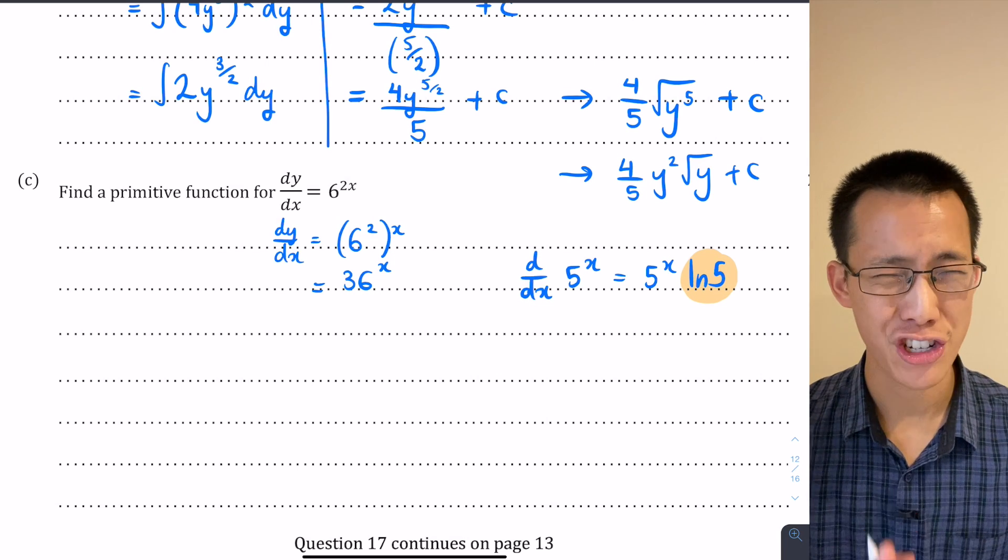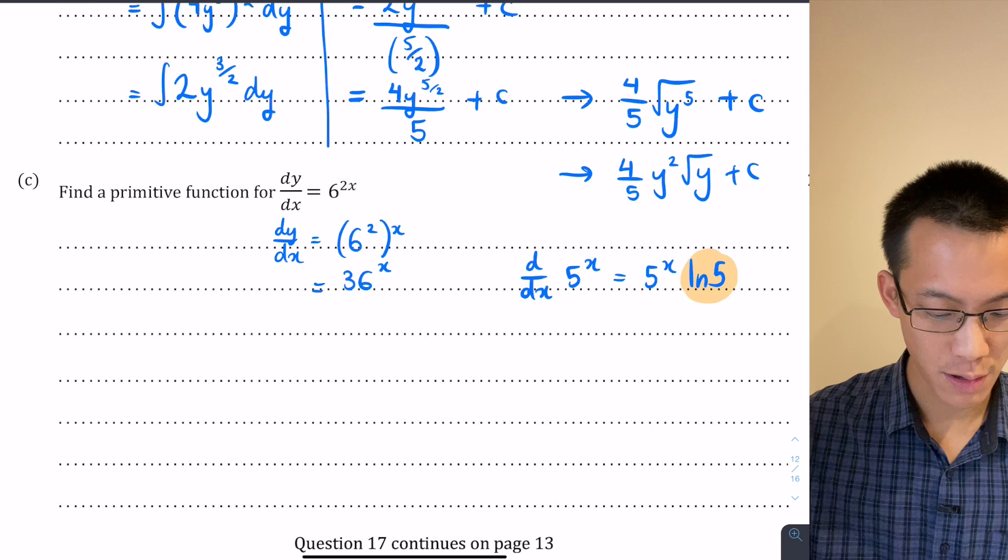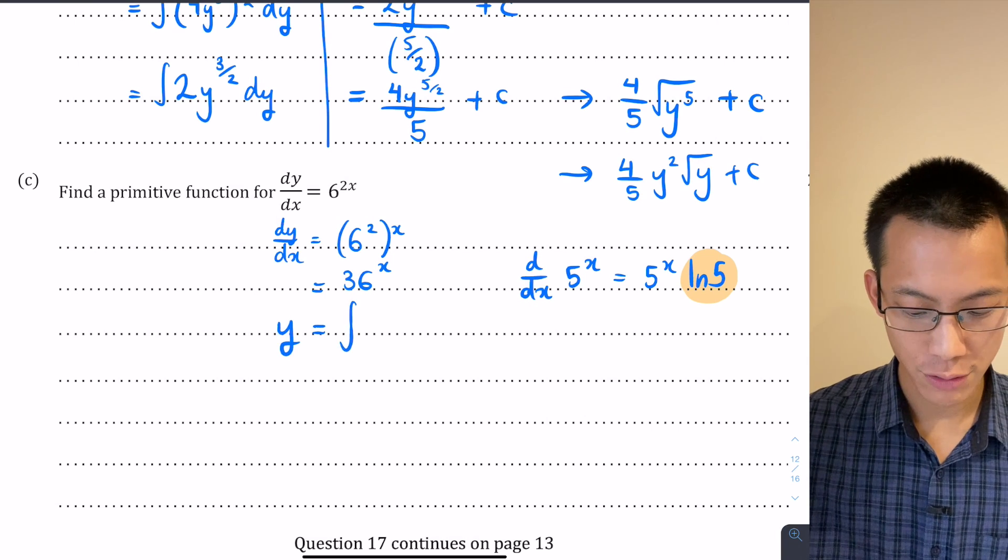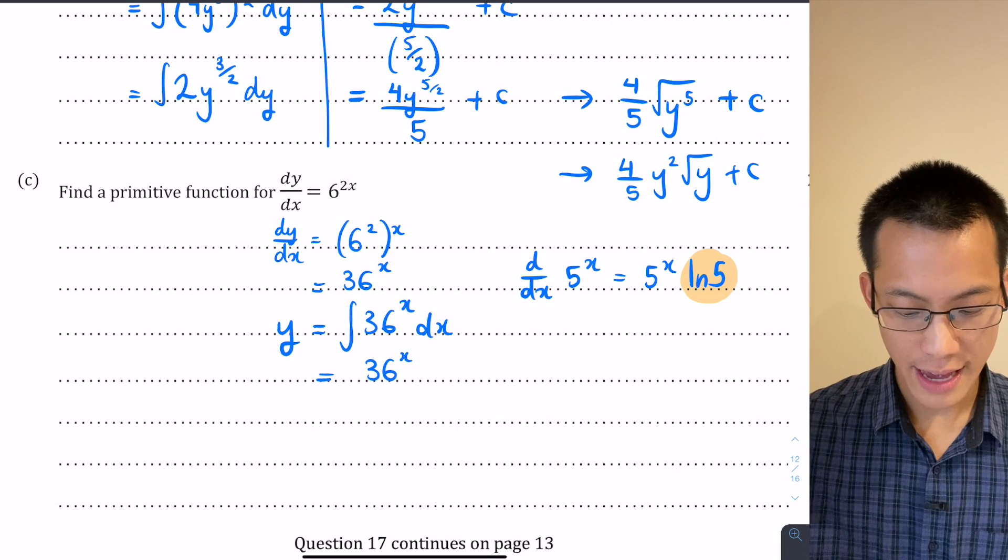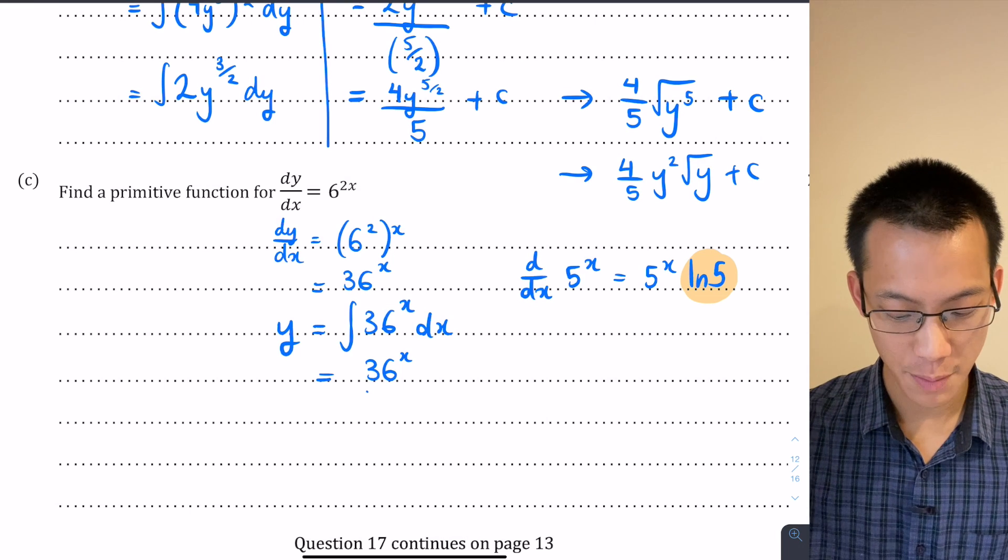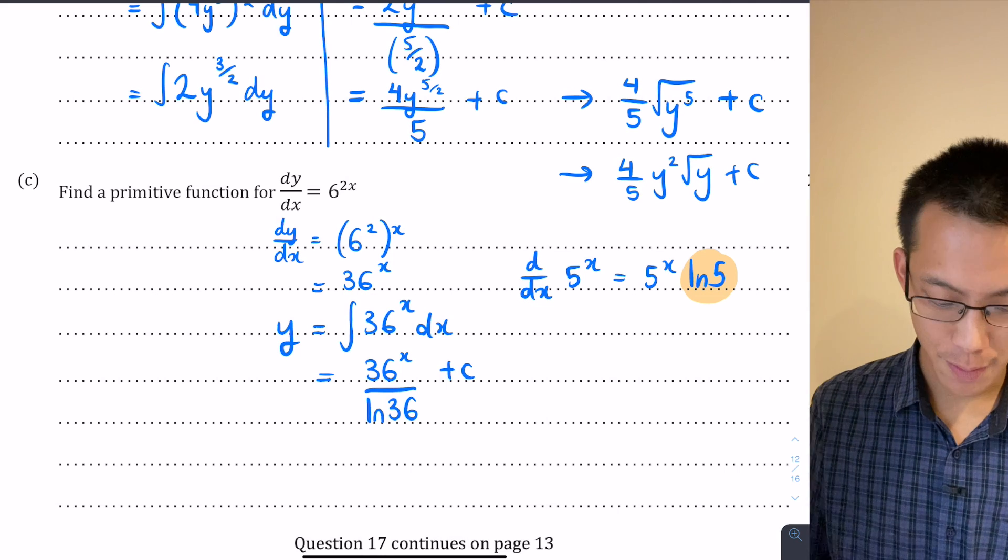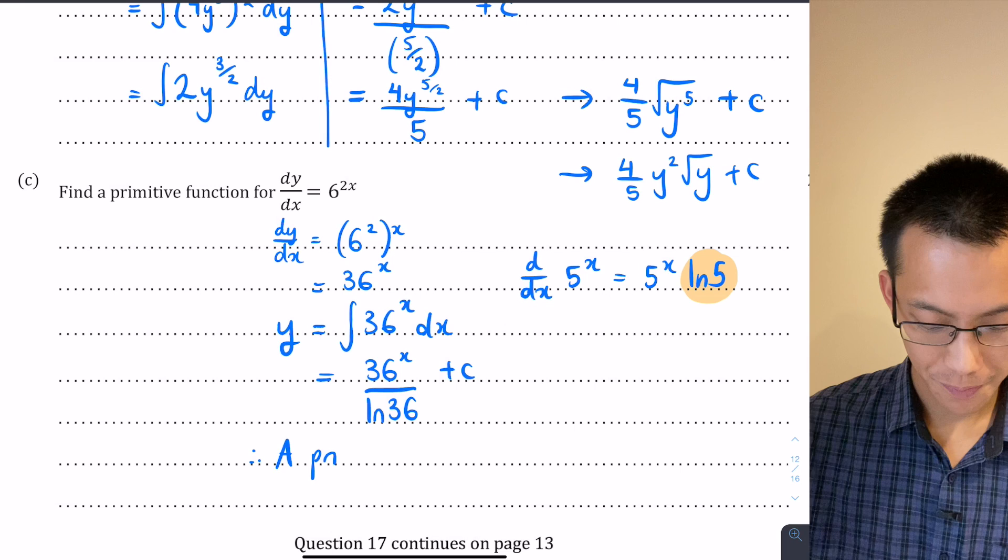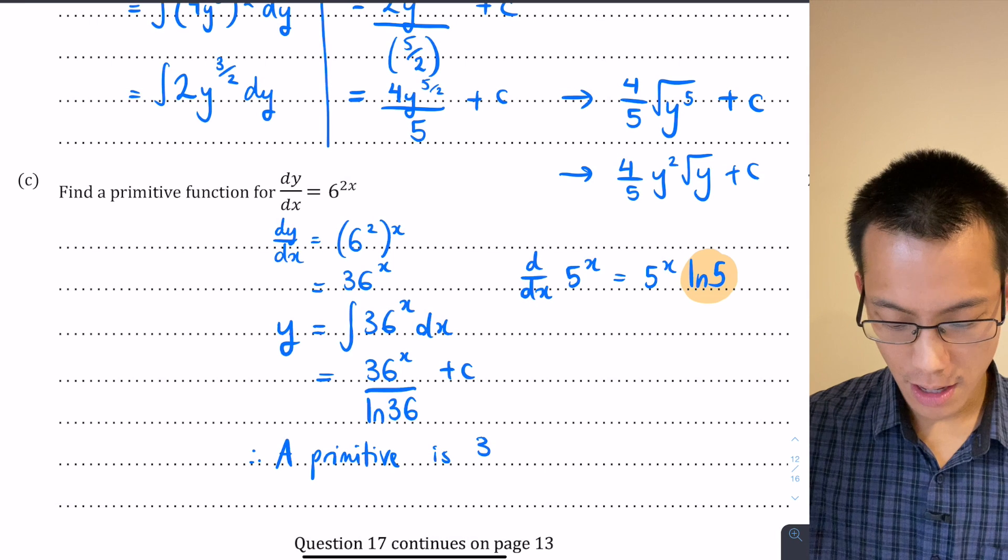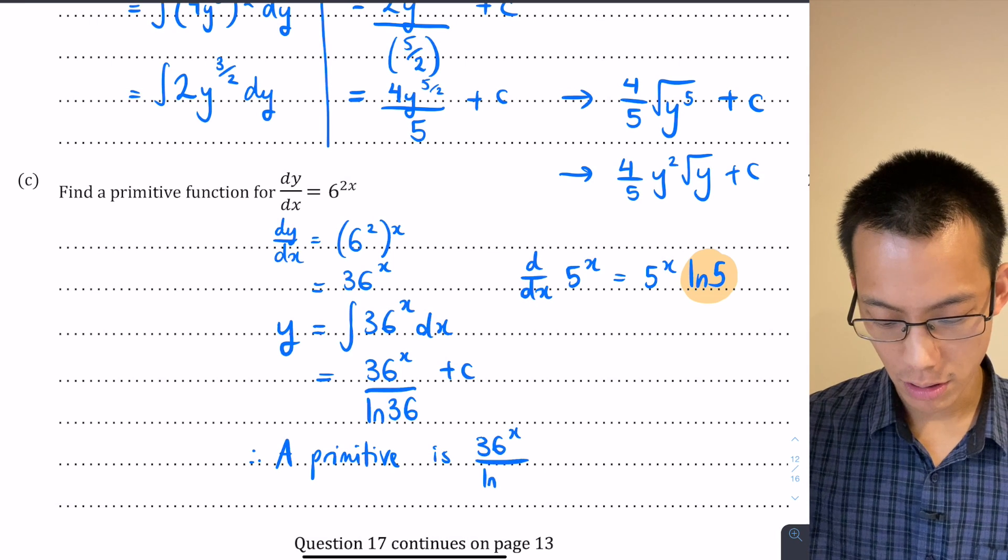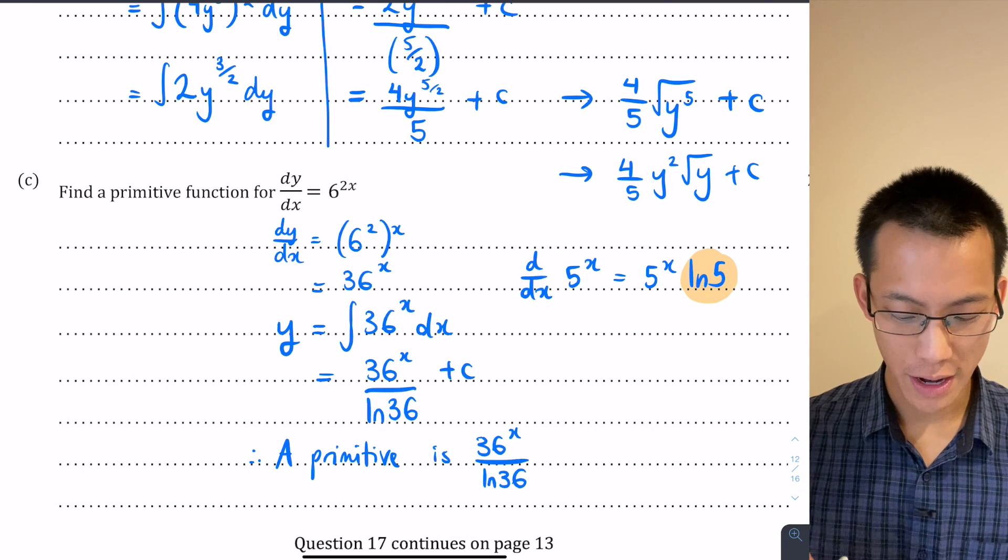Now since that's the way differentiation works, to integrate I'm going to divide by log of whatever the base happens to be. So therefore the primitive function y is going to be the integral of 36 to the x with respect to x. It becomes 36 to the x, but instead of multiplying by log 36 I'm going to divide by log 36, plus my constant. Since they've said find a primitive function, then I'm going to say a primitive is, I'm just going to choose c equals 0, so that's 36 to the x on log 36.